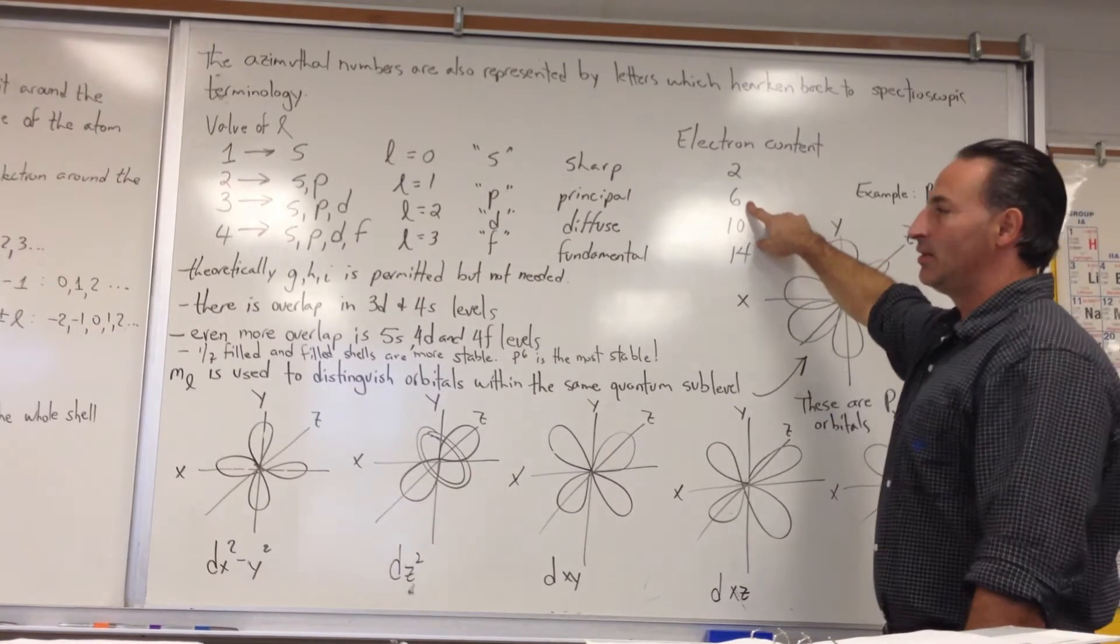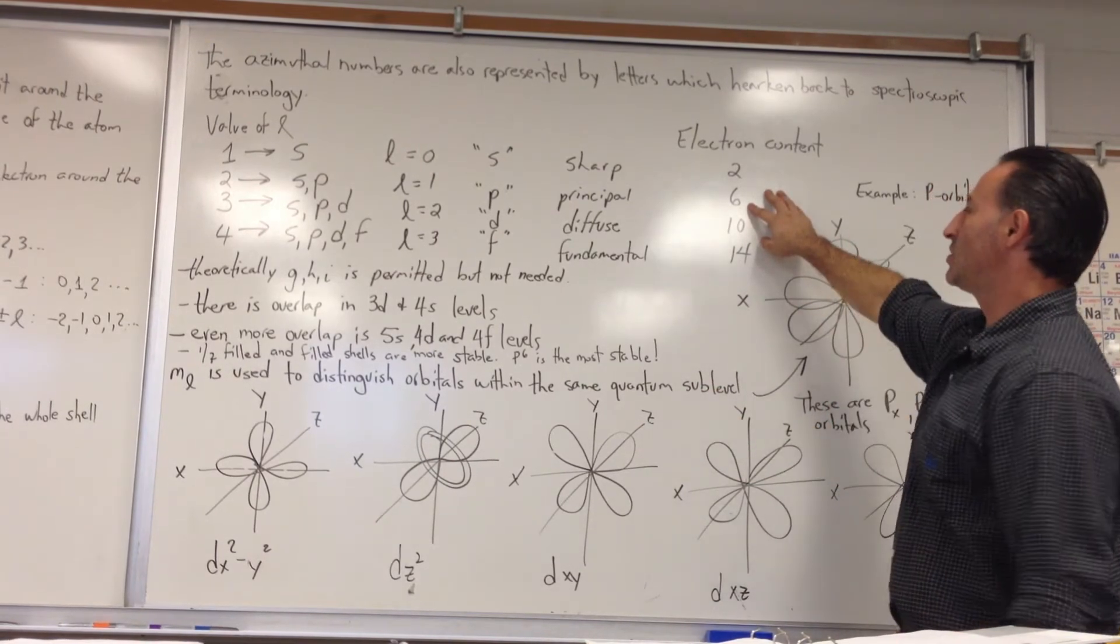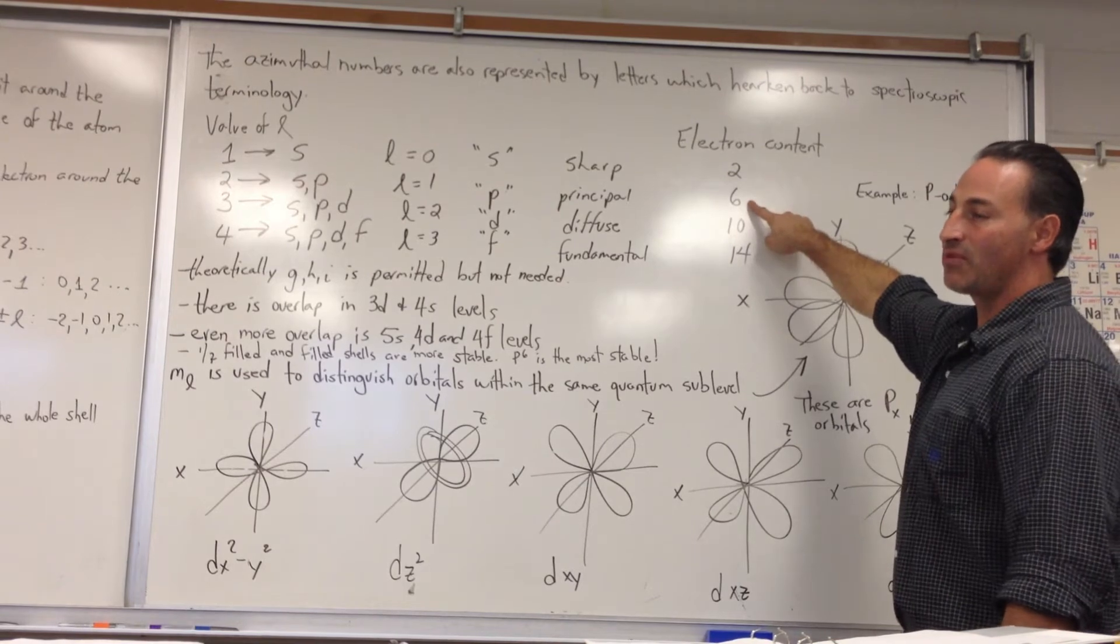P orbitals can have an X orientation, a Y orientation, or a Z orientation. So they can hold a maximum of six electrons.